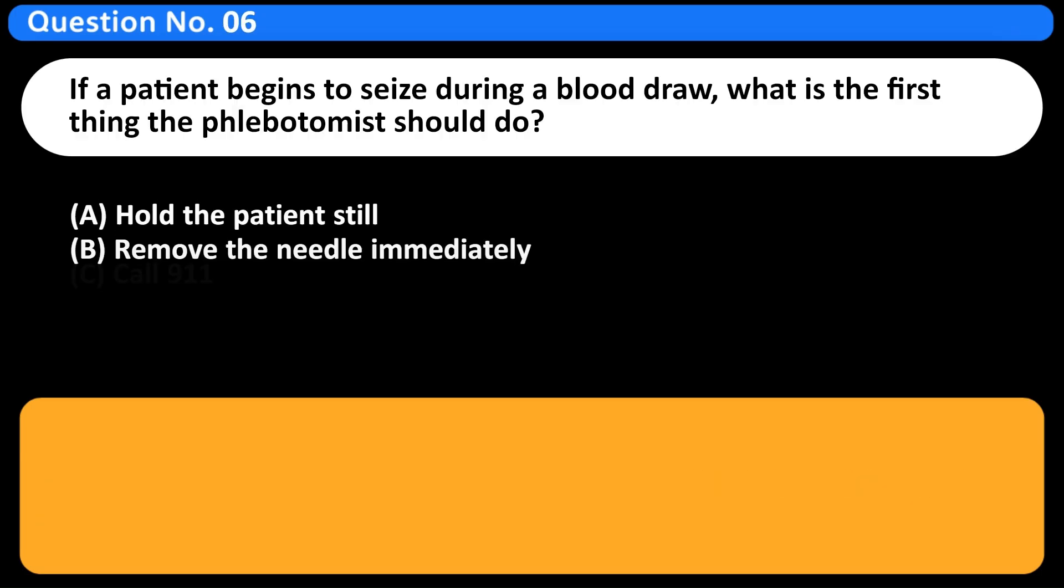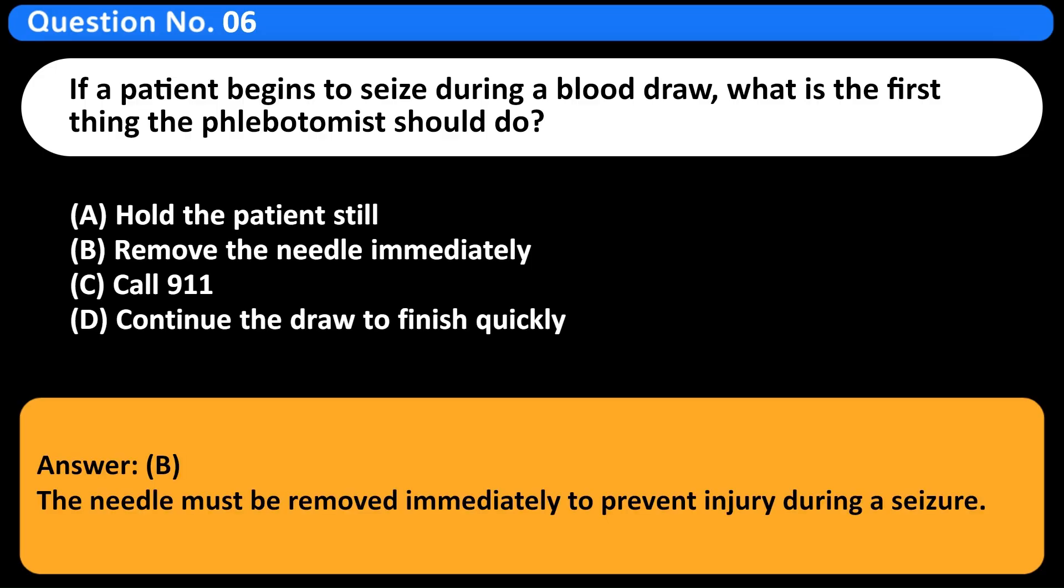If a patient begins to seize during a blood draw, what is the first thing the phlebotomist should do? A. Hold the patient still. B. Remove the needle immediately. C. Call 911. D. Continue the draw to finish quickly. Answer B. The needle must be removed immediately to prevent injury during a seizure.